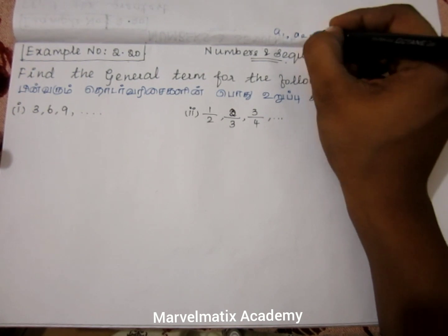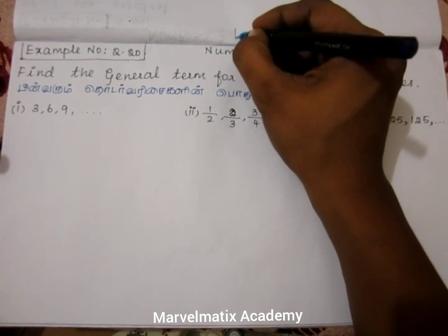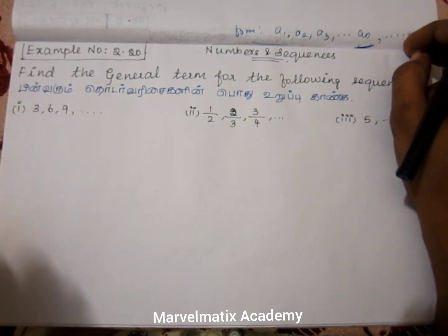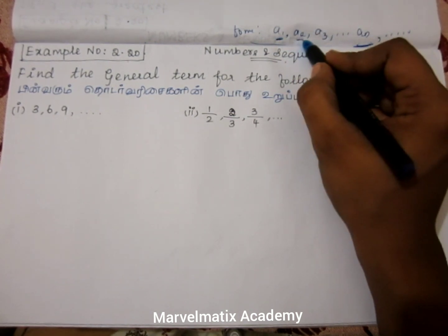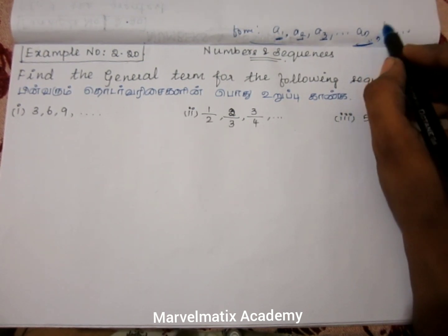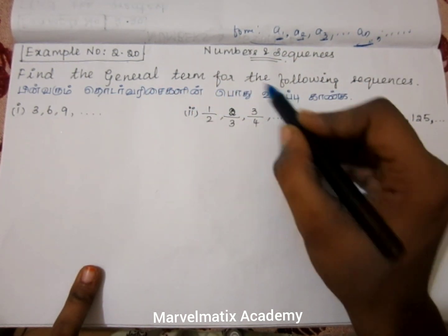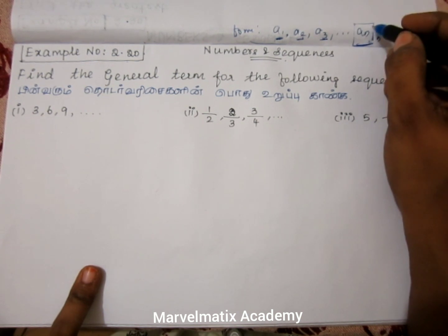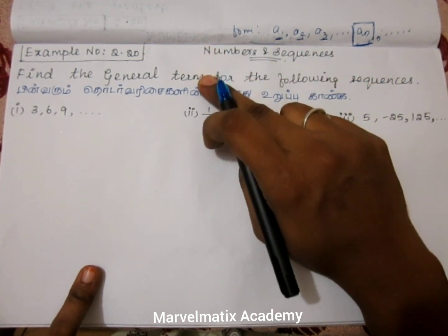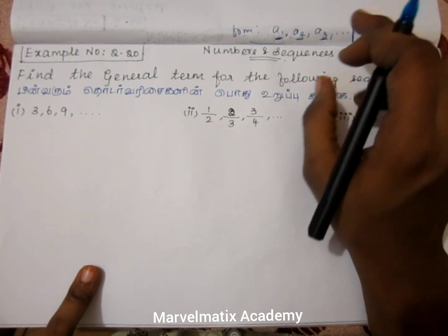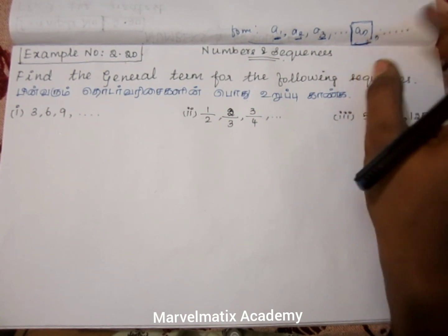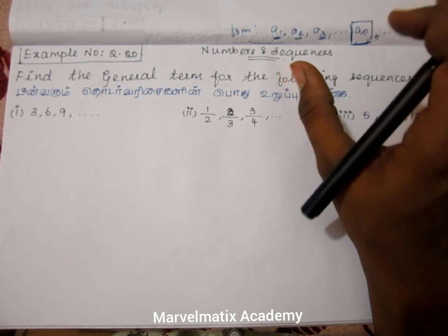A sequence generally takes the form a1, a2, a3, and so on. The terms a1, a2, a3 represent the first, second, and third elements of the sequence respectively.